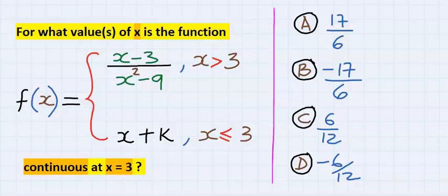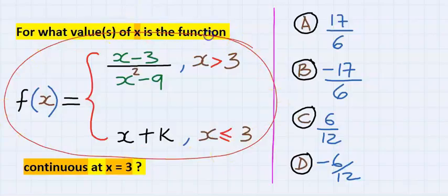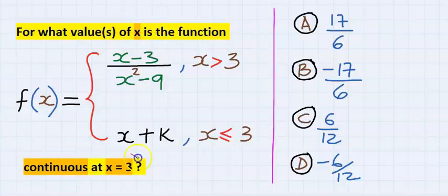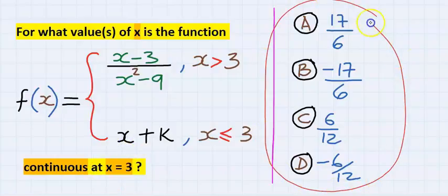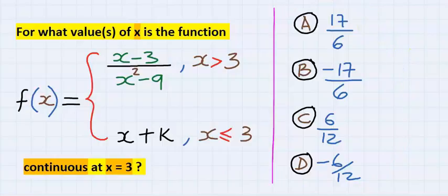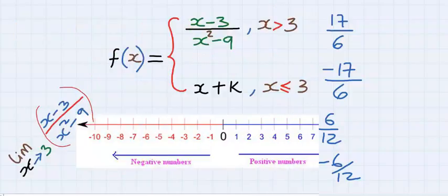Let's consider this given question: for what values of x is this function continuous at x equal to 3? Thereafter we are going to choose from one of these options. To solve this, let's understand the question.